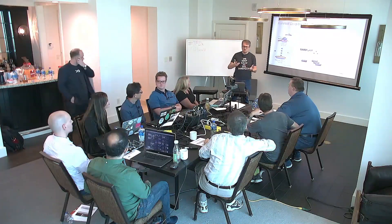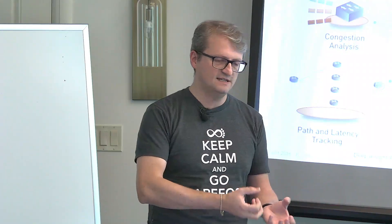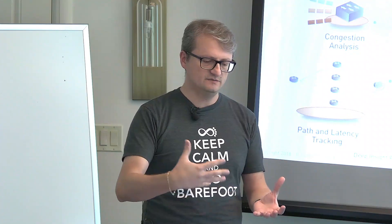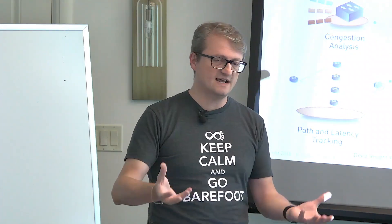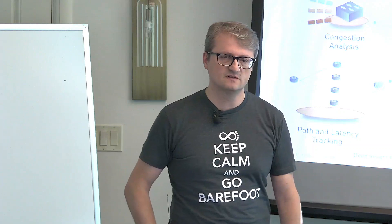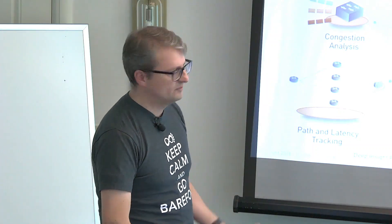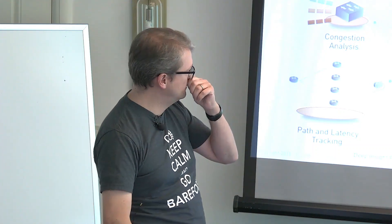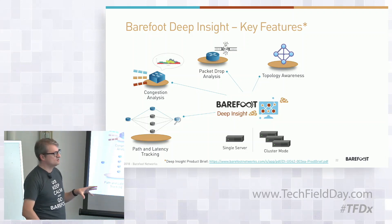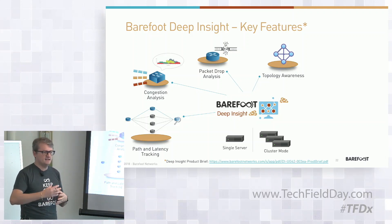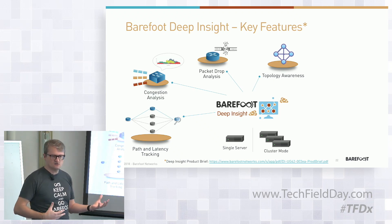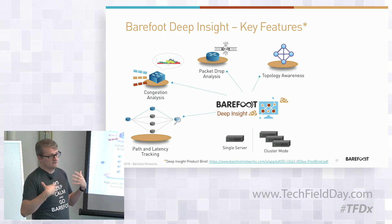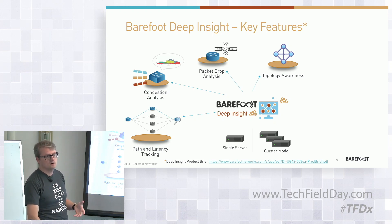As soon as you receive an anomaly, the application processes it in a matter of milliseconds. DeepInSight also has topology awareness — when there is a problem, we can surface it at the topology level. Packet drops and congestion are great workflows: you start from the topology, see the problem, and then use drill-down workflows to understand more.